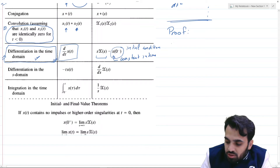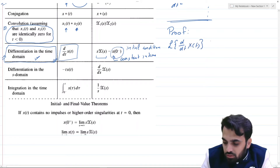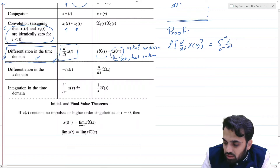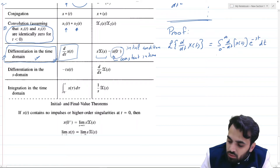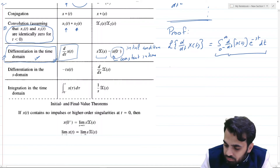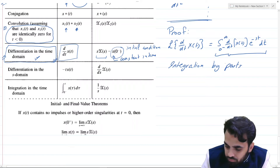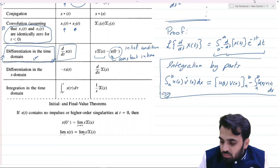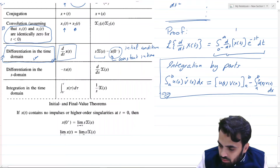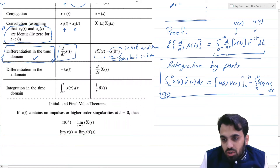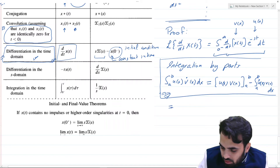We are interested in the Laplace transform of d/dt x(t). This is equivalent to the integral from 0⁻ to infinity of [d/dt x(t)] · e^(−st) dt. We can solve this integration using integration by parts.